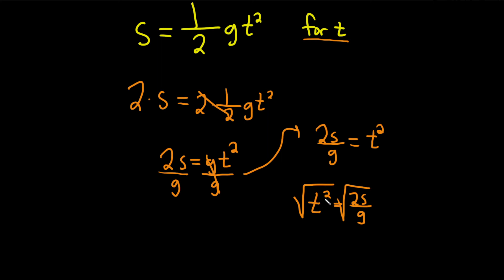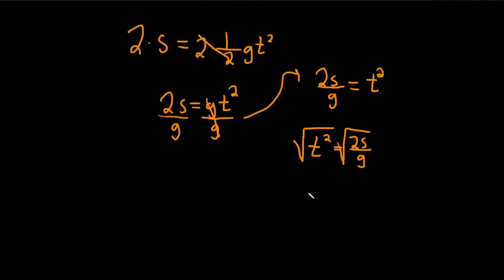Well, whenever you take the square root of a variable squared, you always get a plus or minus. So we get t equals plus or minus the square root of 2s over g. And that would be the final answer. I hope this video has been helpful. Good luck.